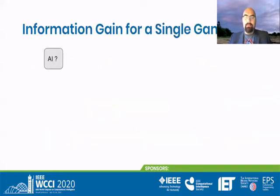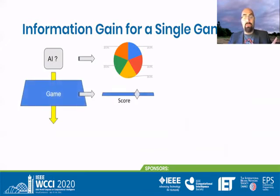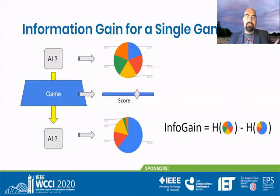What's the general idea? Imagine we have an AI and we don't know which of the 27 AIs it is — meaning there's an equal distribution over our assumption of what AI we're looking at. We could then have that AI play a given game, which would result in a score. Looking at that score, we can update our assumption about what AI we're dealing with, and maybe our distribution would shift accordingly. These two distributions have an entropy, and we can compare them and take the difference — that in a nutshell is the information gain: the average reduction in uncertainty when we observe a certain value, in this case a score, but it could also be the win rate or any other scalar value the game provides.